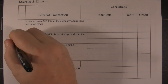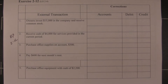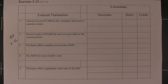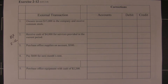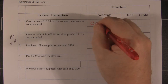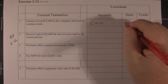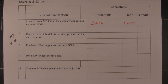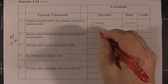This is exercise 2-12. We have a junior accountant who recorded some investments and might have made some mistakes. The first transaction: we invested $15,000 and received common stock. He debited common stock and credited cash — that's wrong. The correction in red: we received cash as a company, so we debit cash for $15,000 and credit common stock for $15,000.